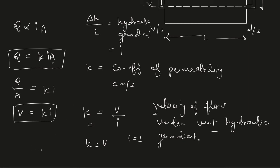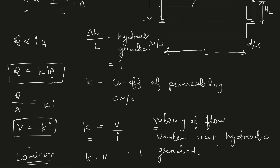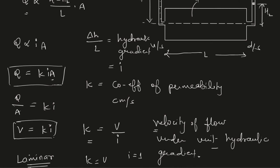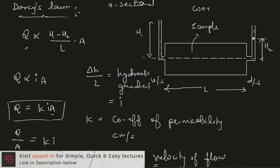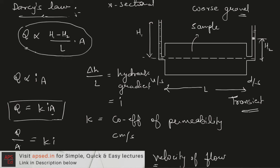Darcy's law has one key assumption: the flow is laminar. For most soils this assumption is almost always valid, unless the medium is coarse gravel, in which case flow can become transient — meaning the Reynolds number will be higher. If transient flow is present, the formulation described by Darcy's law is not completely valid.